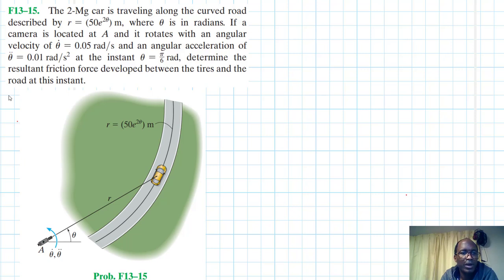If a camera is located at A and it rotates with an angular velocity of theta dot equal to 0.05 rads per second and an angular acceleration of theta double dot equal to 0.01 rads per second squared at the instant theta equals pi over 6 rads, determine the resultant friction force developed between the tires and the road at this instant.